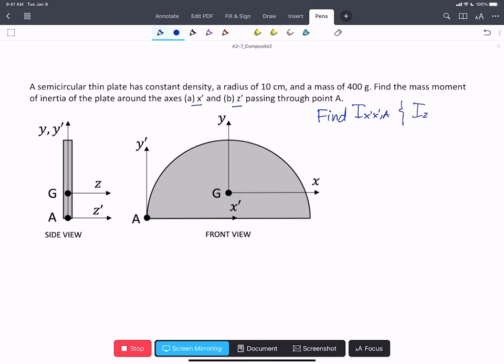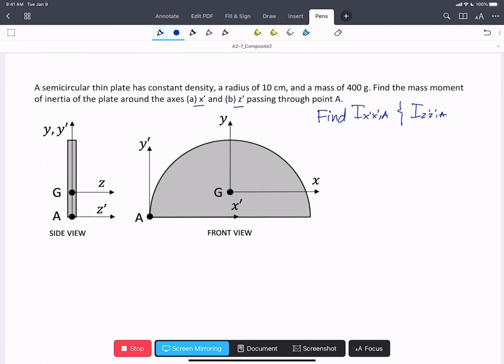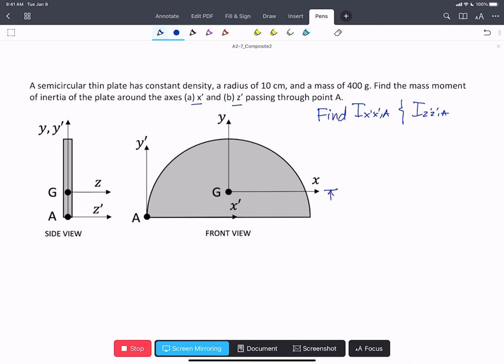and i_z'z' through A. We know from our tables that this distance here between G and A in the y direction is 4r over 3π. That equals D.